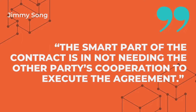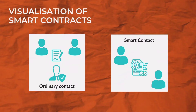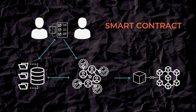As any finance world, it is based on contracts — so what are smart contracts? The smart part of the contract is in not needing the other party's cooperation to execute the agreement. In Ukraine, a third party is usually used to sign a contract as a guarantee. But in smart contracts, the system itself is the guarantee.